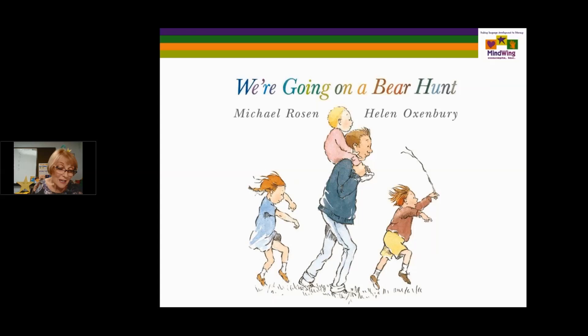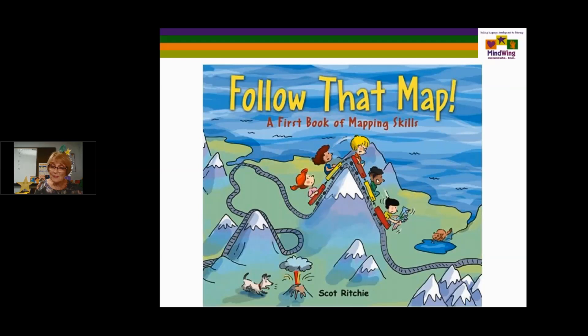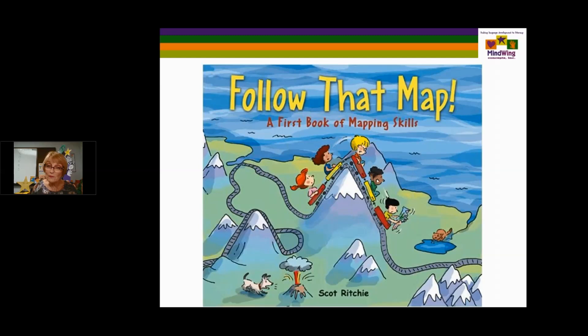Follow That Map: First Book of Mapping Skills — I put it in the action sequence stage because it's a book about how to make maps that get you from one place to another by a series of actions. There's Sally who gets going, but there's a little dog and a little cat on each of the pages, which makes it fun to find them. It's easy to follow, but it's following directions — one of the first things we look at when we look at a series of actions.